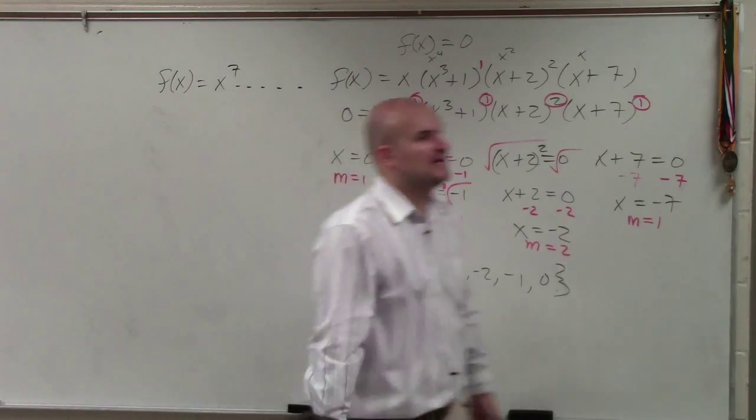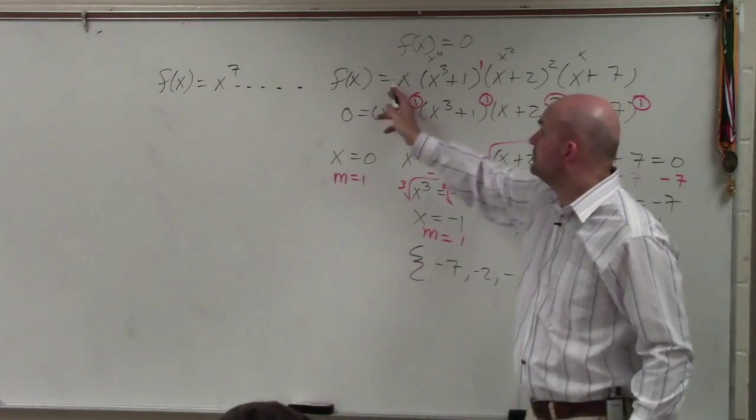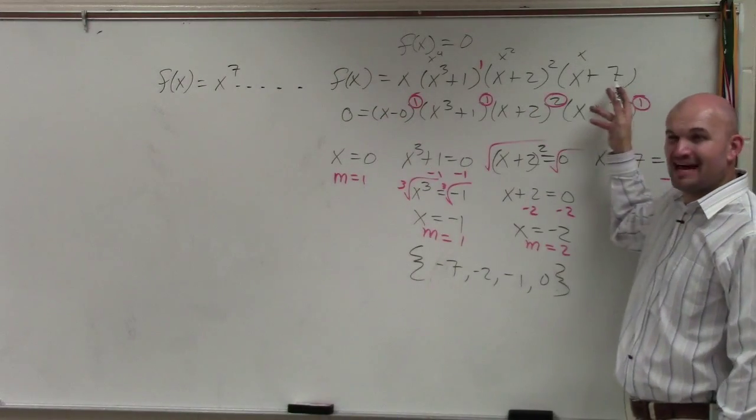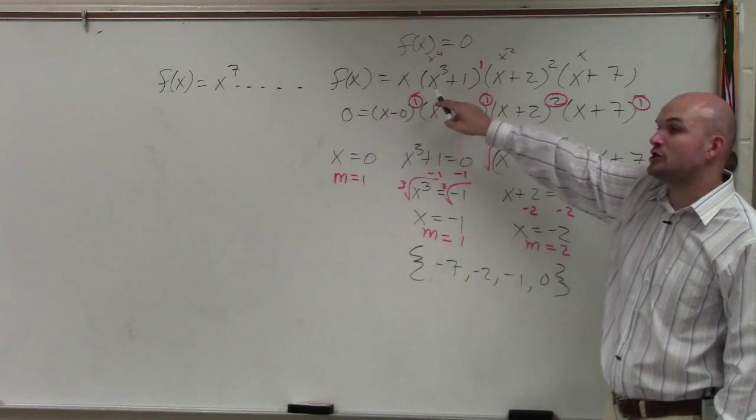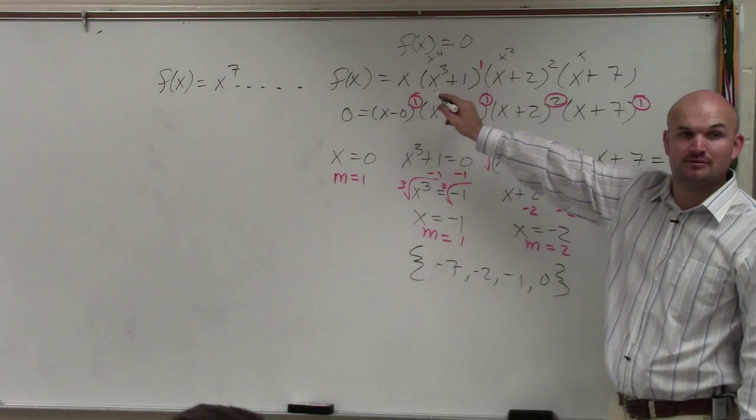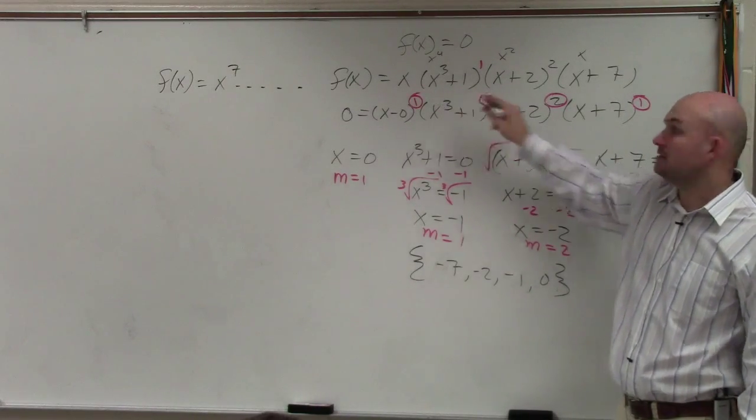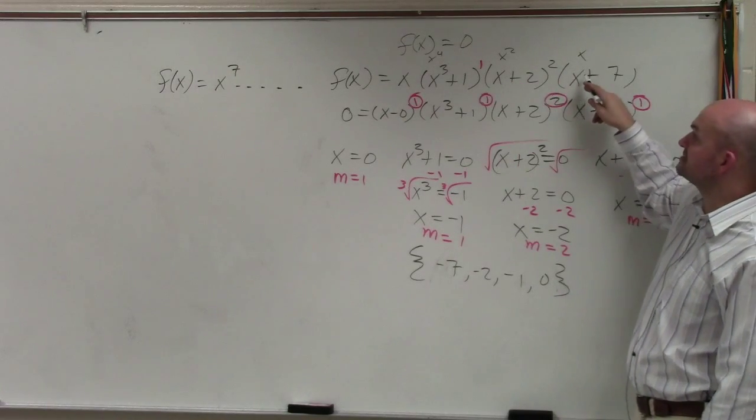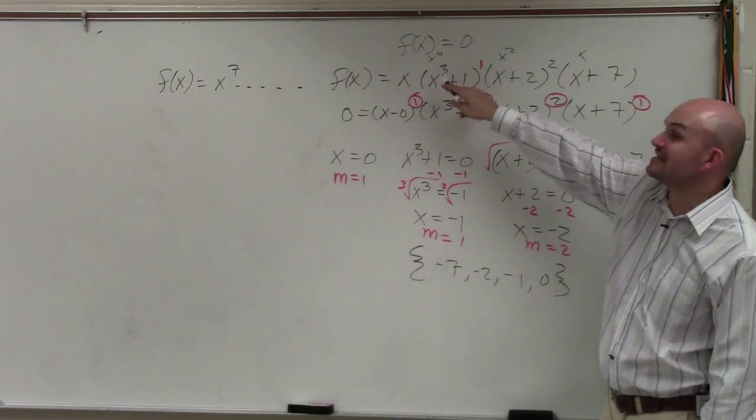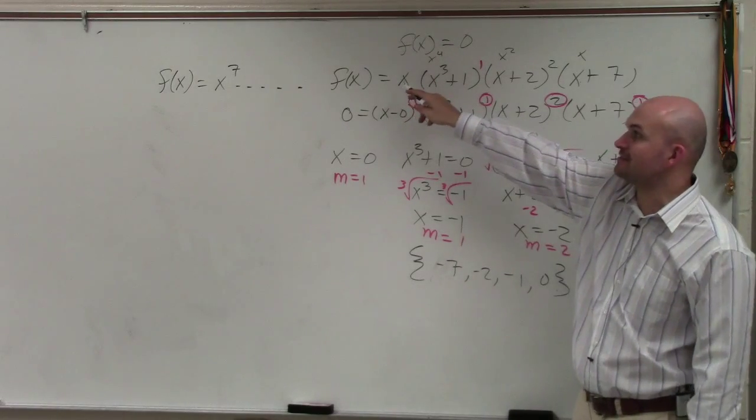So if I was going to find the end behavior, I would multiply those out. If I multiply this all out, like the last example I did, my leading term would be x to the seventh power. Does everybody see that? Because x plus 2 squared is x squared, so x squared times x is x cubed, times x cubed is x to the sixth, times x is x to the seventh, right?